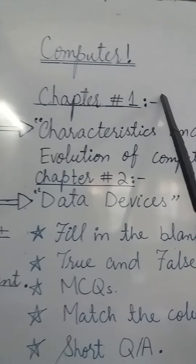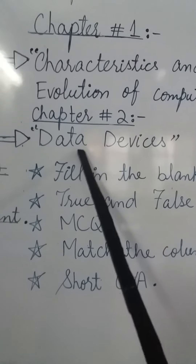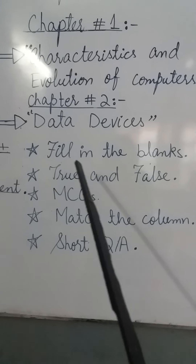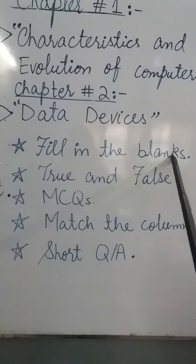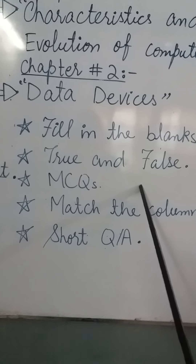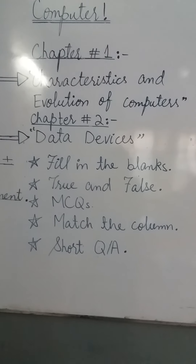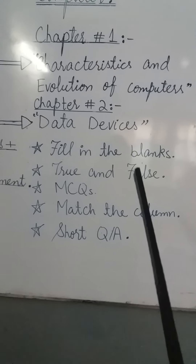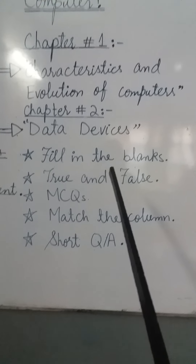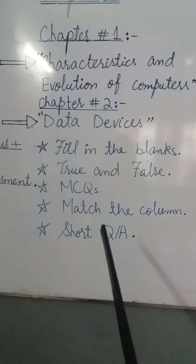In computer studies there is chapter number one — characteristics and evolution of computers — and chapter number two — data devices. In both chapters there are fill in the blanks, true and false statements, MCQs, match the column, and short question answers. All these things are included in your first online assessment. Understand all these things of chapter number one and chapter number two.